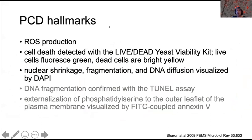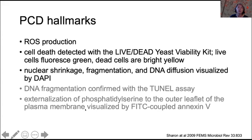Programmed cell death can be easily diagnosed by detection of reactive oxygen species production or burst, detection of cell death with common cytological kits like live-dead kits, nuclear shrinkage by staining DNA or nuclei to visualize shrinkage and fragmentation, and DNA diffusion — and then somewhat more sophisticated methods once those first screens allow for detection of programmed cell death.